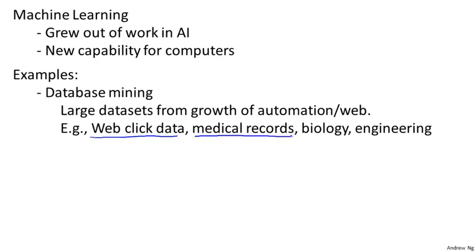Medical records: with the advent of automation, we now have electronic medical records. If we can turn medical records into medical knowledge, we can start to understand disease better. Computational biology: with automation, biologists are collecting lots of data about gene sequences and DNA sequences, and machine learning algorithms are giving us a much better understanding of the human genome. And in all fields of engineering, we have larger and larger data sets that we're trying to understand using learning algorithms.